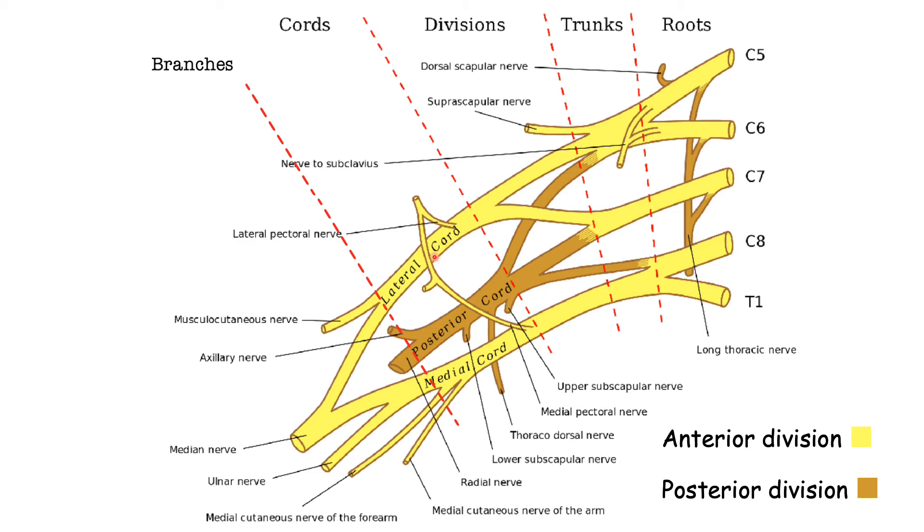And from these cords we're gonna have the terminal branches or terminal nerves. In this picture we have many nerves, however there are a few nerves that we will focus on in this video. These are the musculocutaneous nerve, the median nerve, the ulnar nerve, the radial nerve, and the axillary nerve.